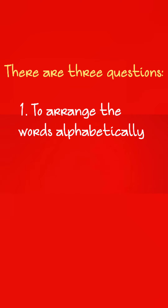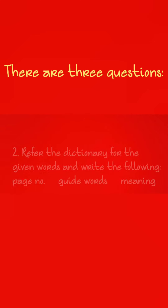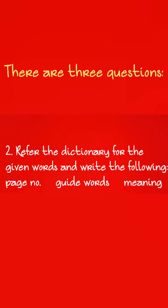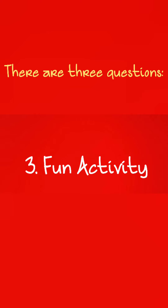That is my solution. Now let me tell you how to do the worksheet. This is similar to the last worksheet questions you have done. In this question, there will be four columns: words, page number, guide words, and meanings. For each word given, you will write the page number, guide words, and meaning in the respective columns. The third and last question is the fun activity which we have just done. Goodbye and have a great day.